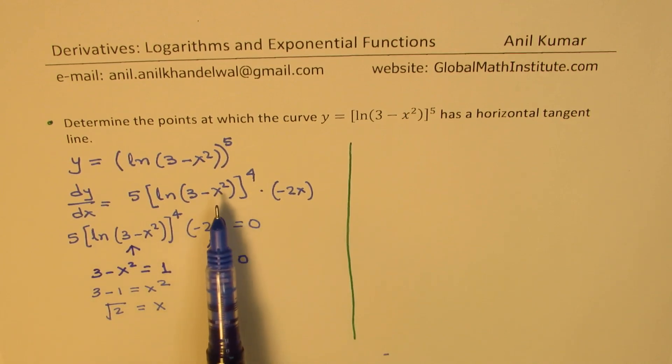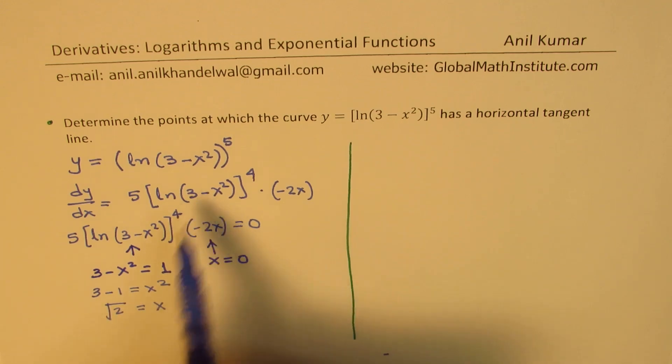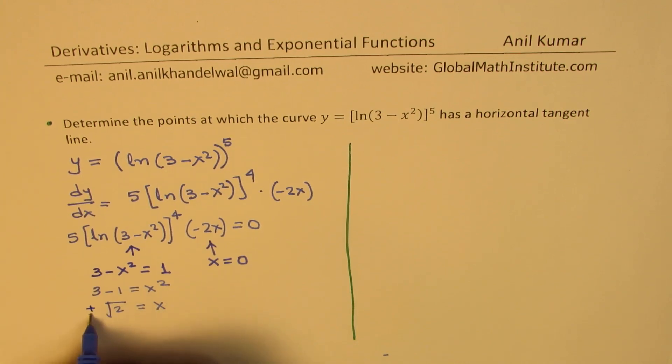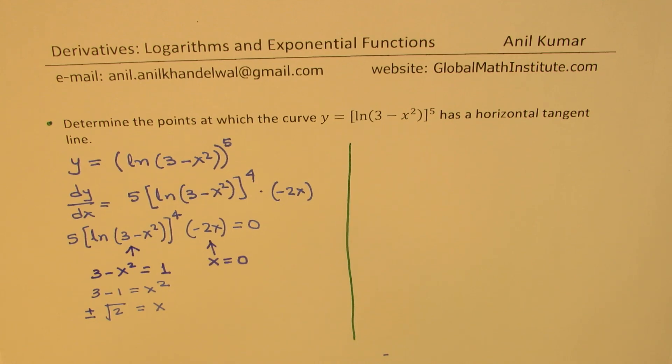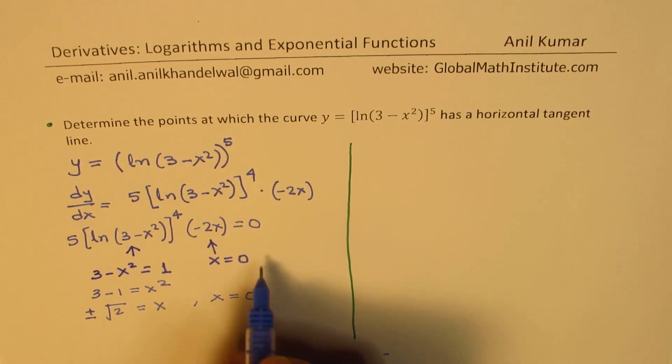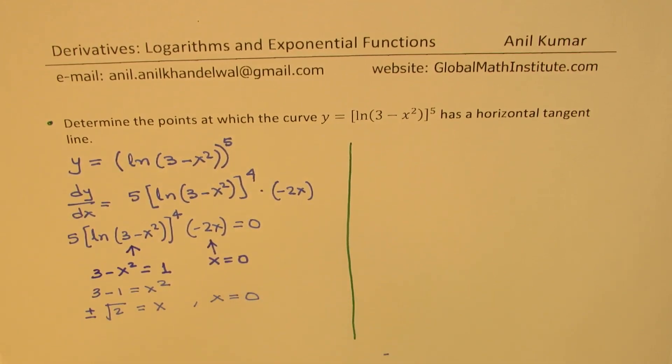Now let's look into the restrictions. x could be between plus and minus square root of 3. So both are possible solutions in this particular case. We get both plus and minus square root of 2 as our answer for the x value, and we already have x equals zero as another solution.